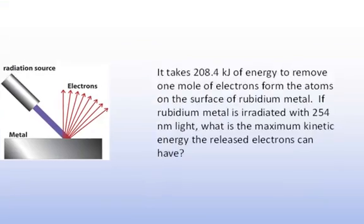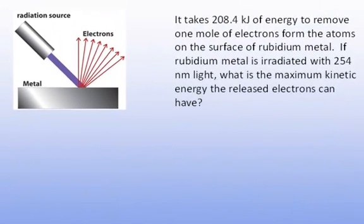Let's take a look at an example using this idea of the photoelectric effect. In this case, we know that it takes 208.4 kilojoules of energy to remove one mole of electrons from the atoms on the surface of rubidium metal. If rubidium metal is irradiated with 254 nanometers of light, which is in the ultraviolet region, what is the maximum kinetic energy the released electrons can have?